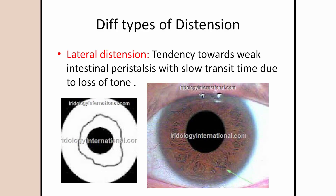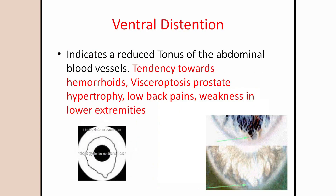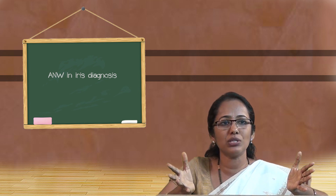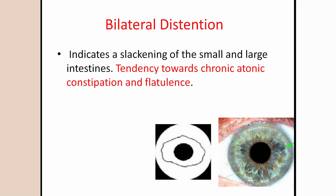Different shapes and sizes of the autonomic nerve wreath suggest something is wrong with the intestine. There are different varieties of autonomic nerve wreath distensions that give a specific idea of intestinal function. Lateral distension and ventral distension are seen — ventral distension indicates a tendency for hemorrhoids, visceroptosis, prostate hypertrophy, low back pain, and weakness in the lower extremities. Bilateral distension shows a tendency toward chronic constipation and flatulence, and a funnel-type distension indicates a tendency for hernia and other tissue displacement.